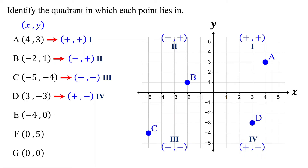Next, we have point E. Its x-coordinate is negative and its y-coordinate is zero. Remember, if the y-coordinate of a point is zero, the point lies on the x-axis. Therefore, point E lies on the x-axis. It does not belong to any of the quadrants. If you plot it, you can also confirm that it is on the x-axis.